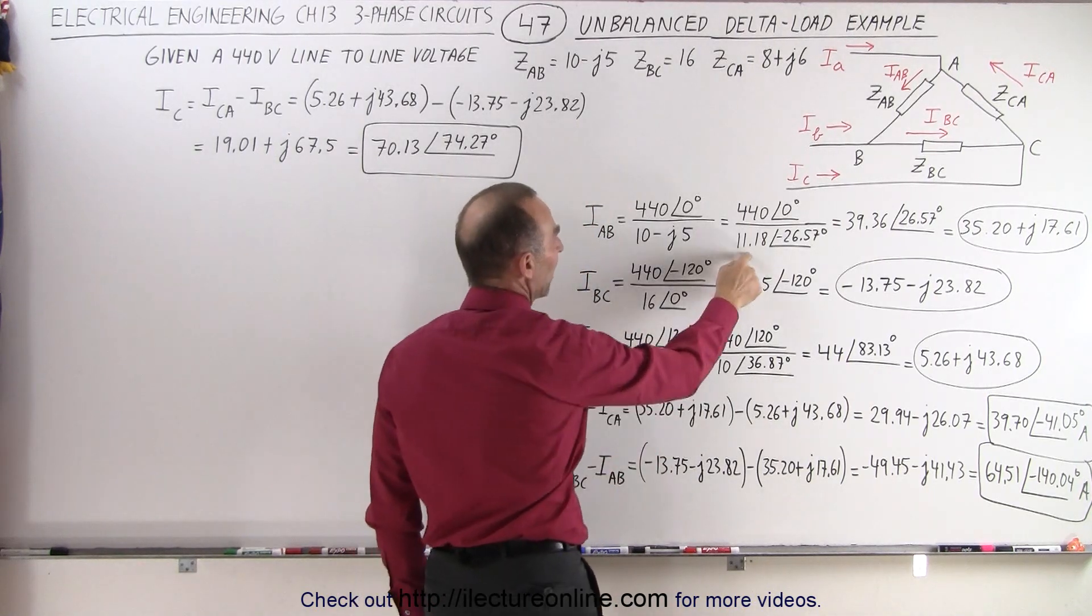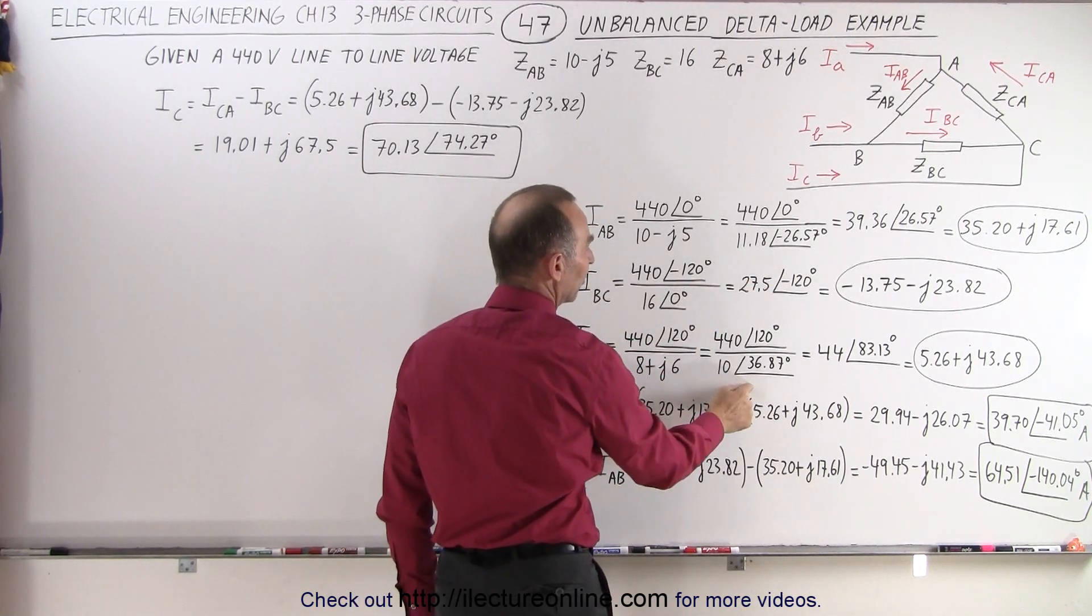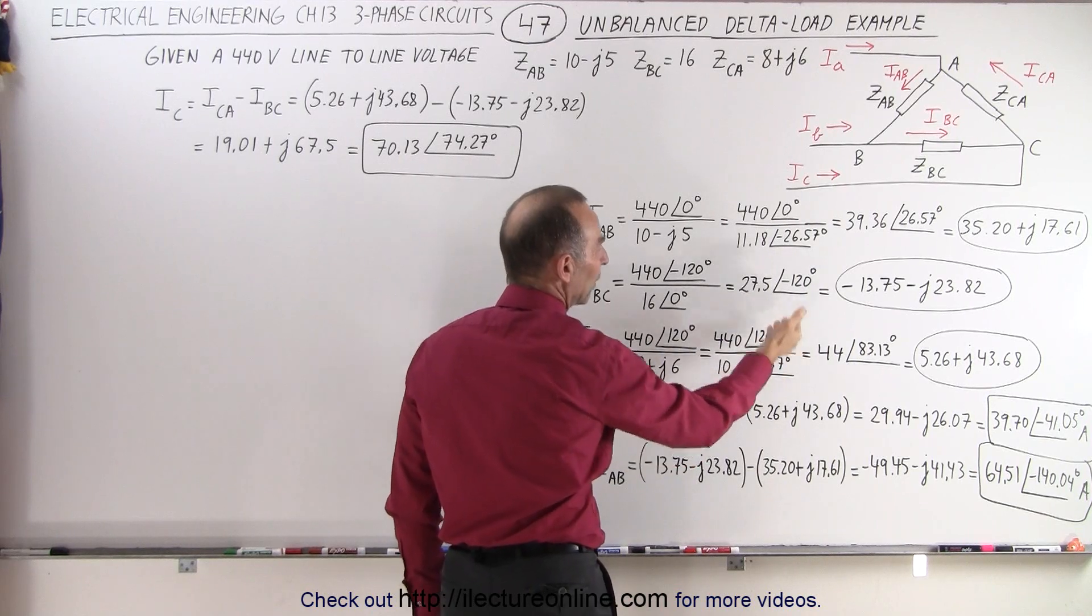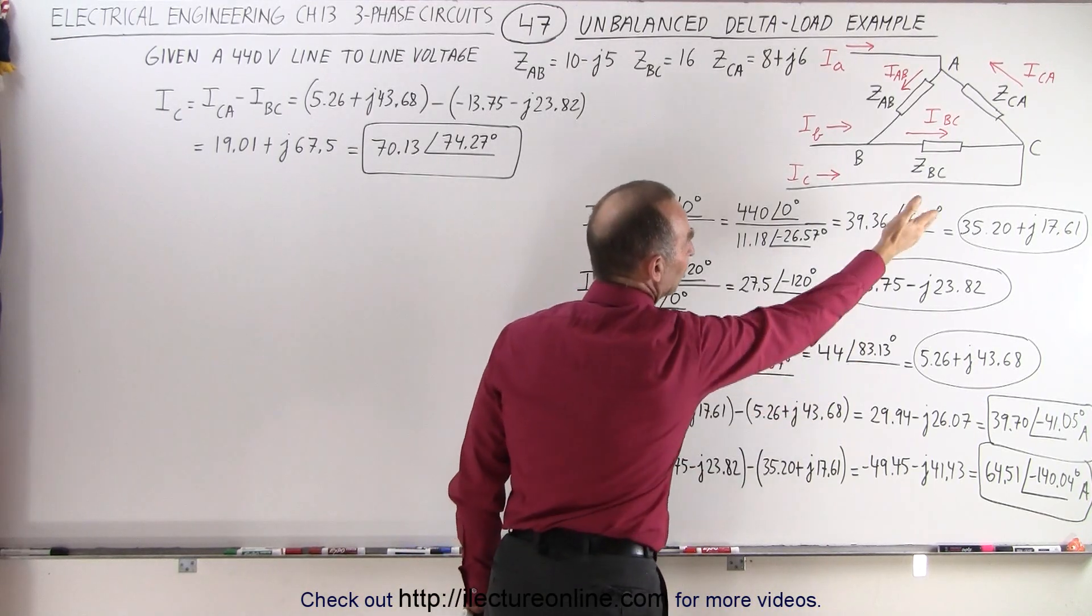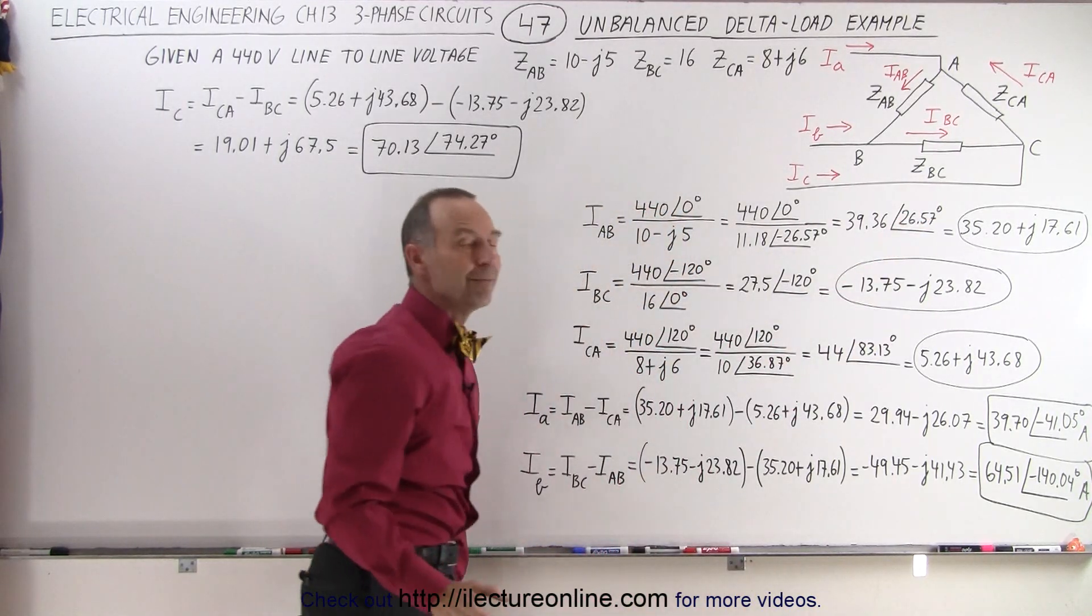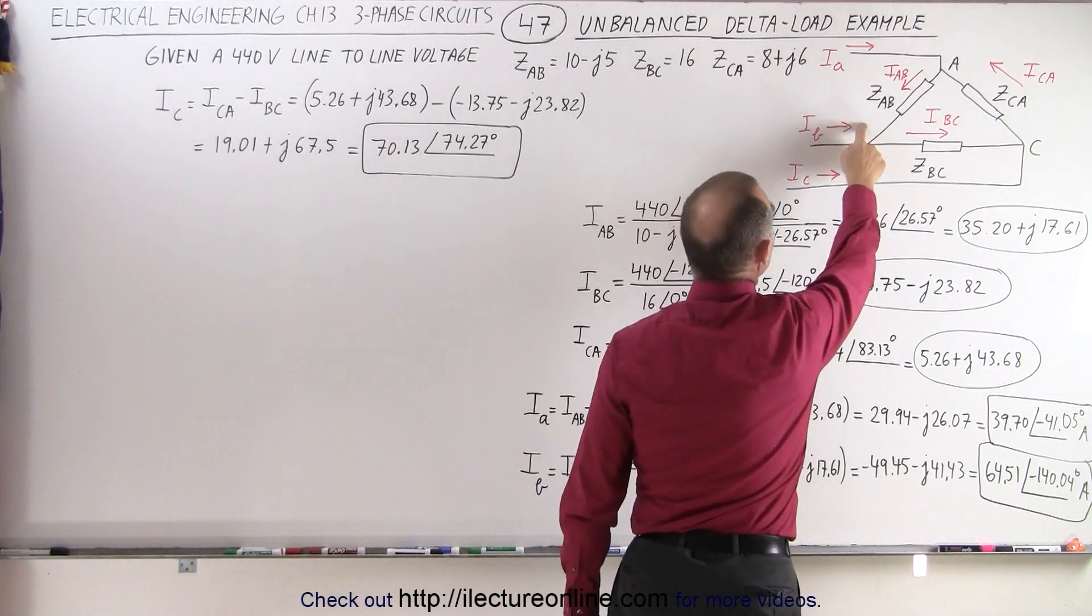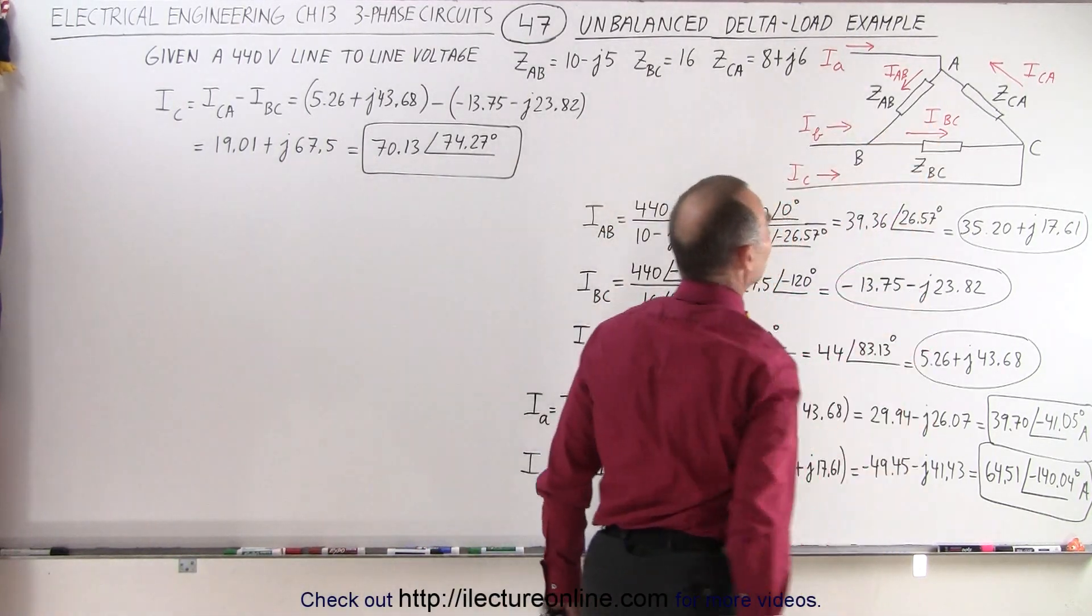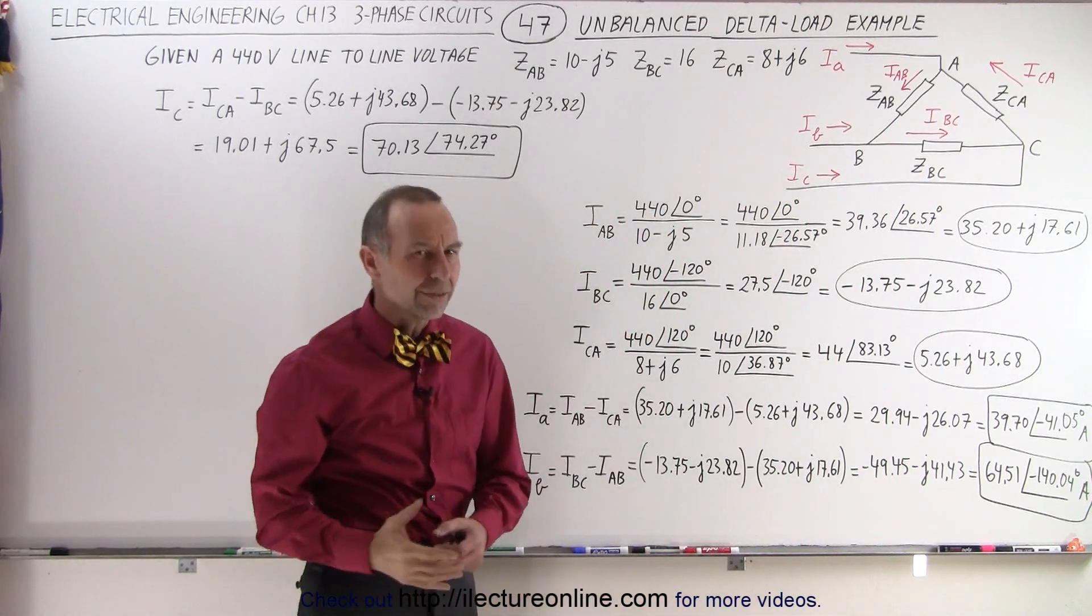So when we convert that into the magnitude and phase angle format, then we divide, we add the phase angles, and we have the corresponding currents, Iab, Ibc, and Ica. So that's the easy part.